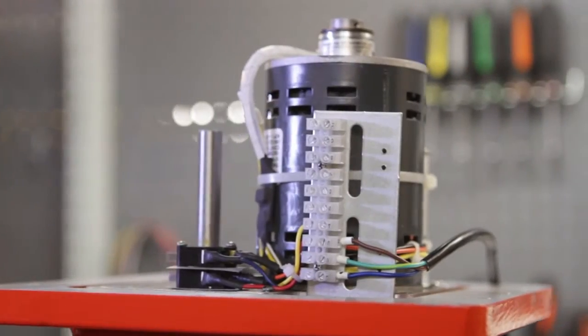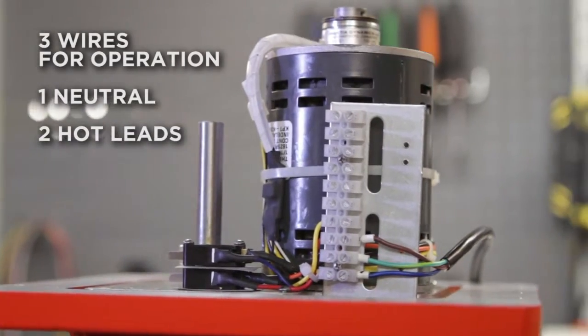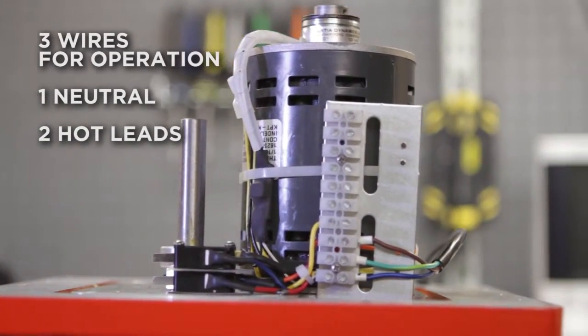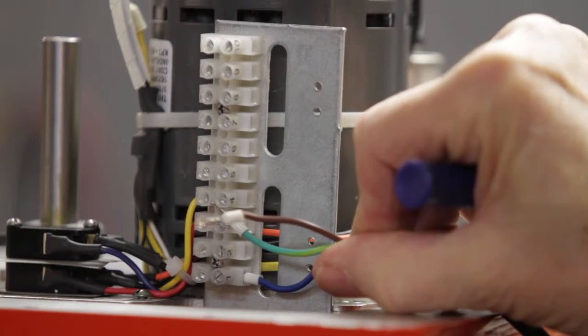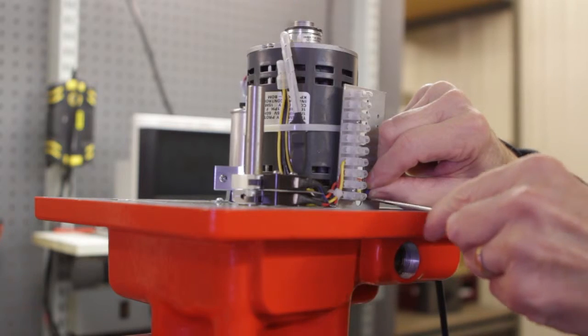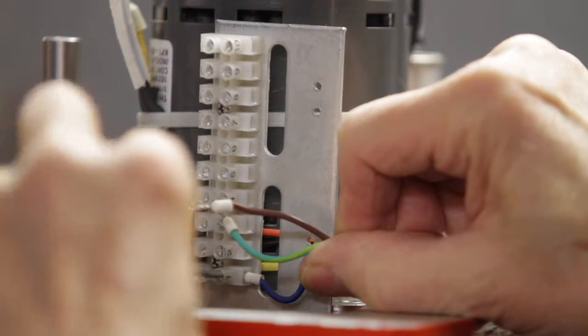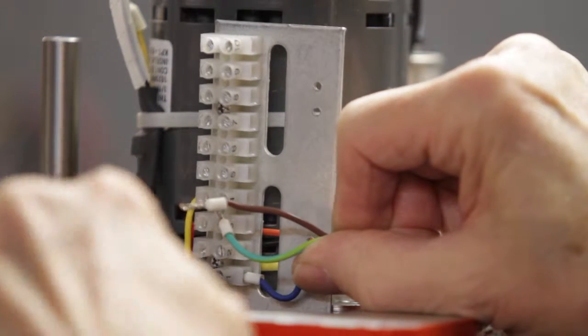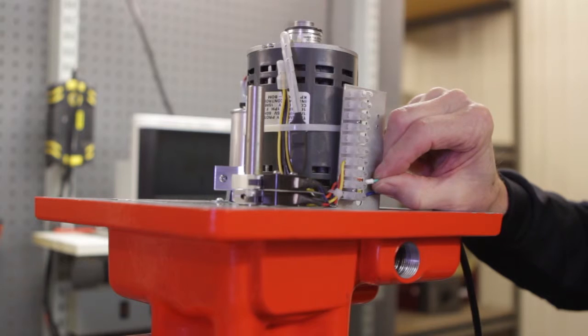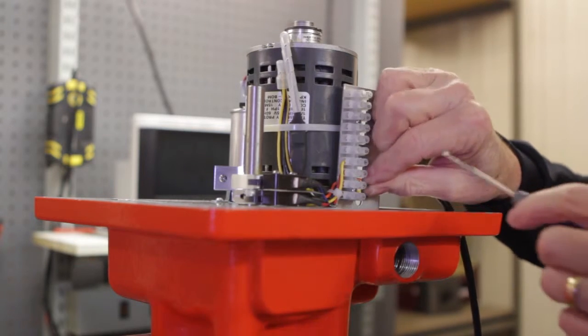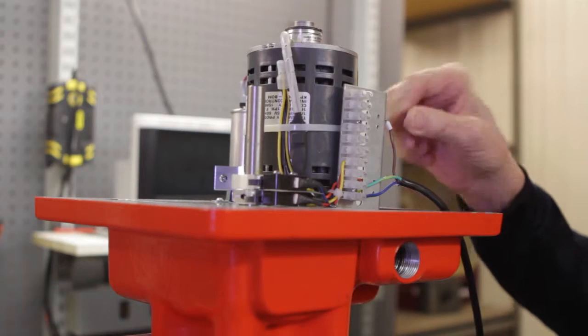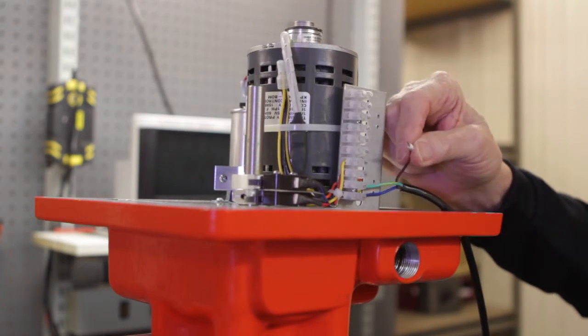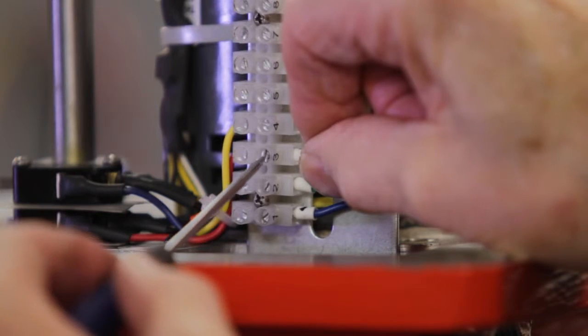A standard actuator requires three wires for operation: a neutral and two hot leads. A neutral is connected to terminal position number one. A hot lead to terminal position number two is used to open the actuator, and a hot lead connected to terminal position number three is used to close the actuator.